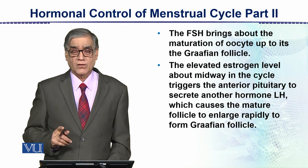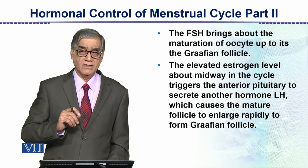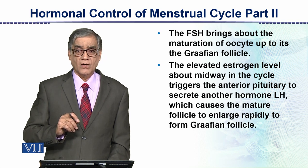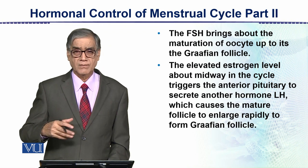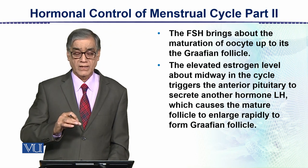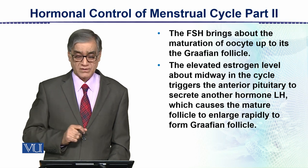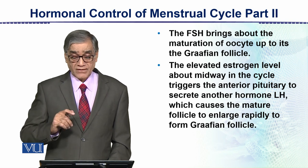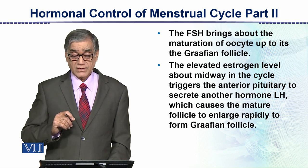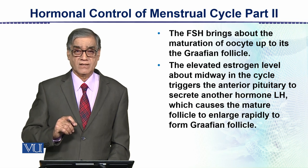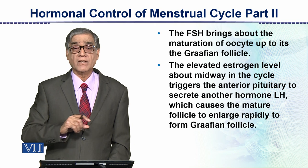Now the follicle stimulating hormone, just as the name suggests, is released by the anterior pituitary. It enters the blood and through the blood it enters the ovary, where it influences the developing follicles. So the FSH brings about the maturation of oocytes up to the graafian follicle. This is why this phase is called the maturing follicle phase.